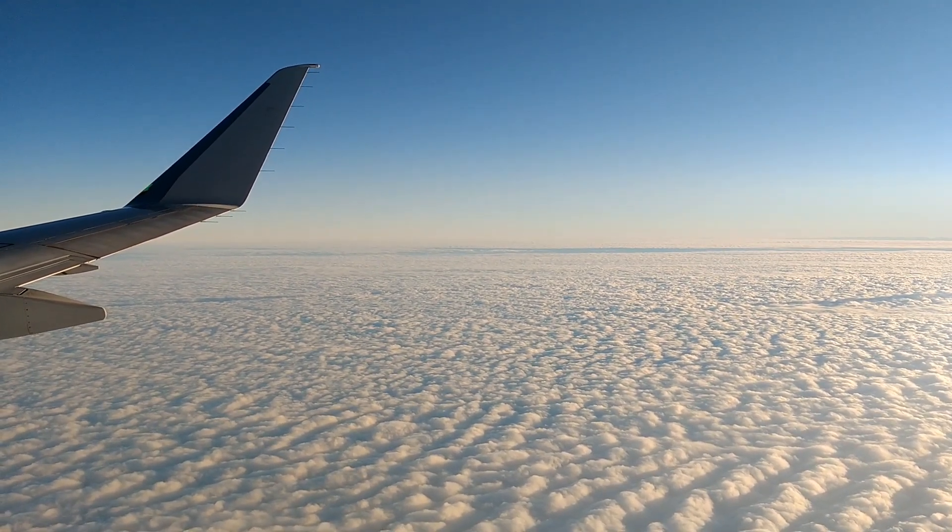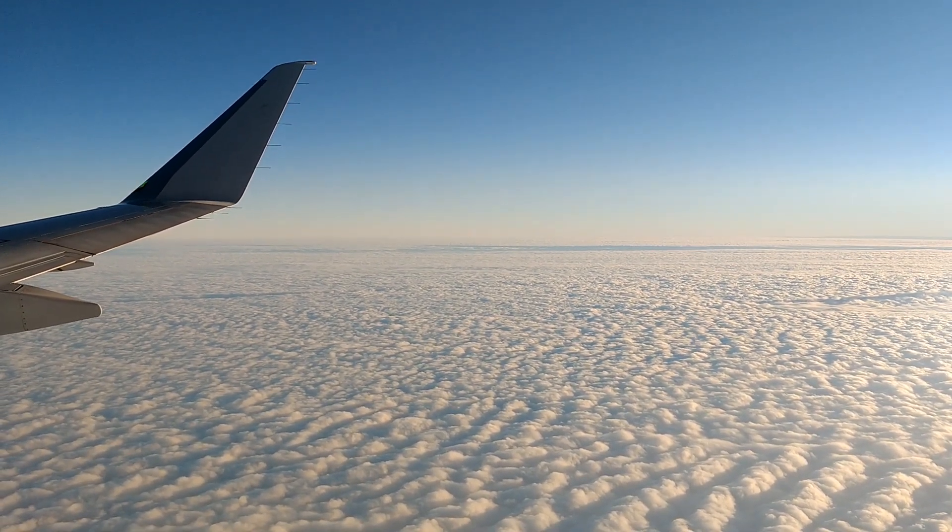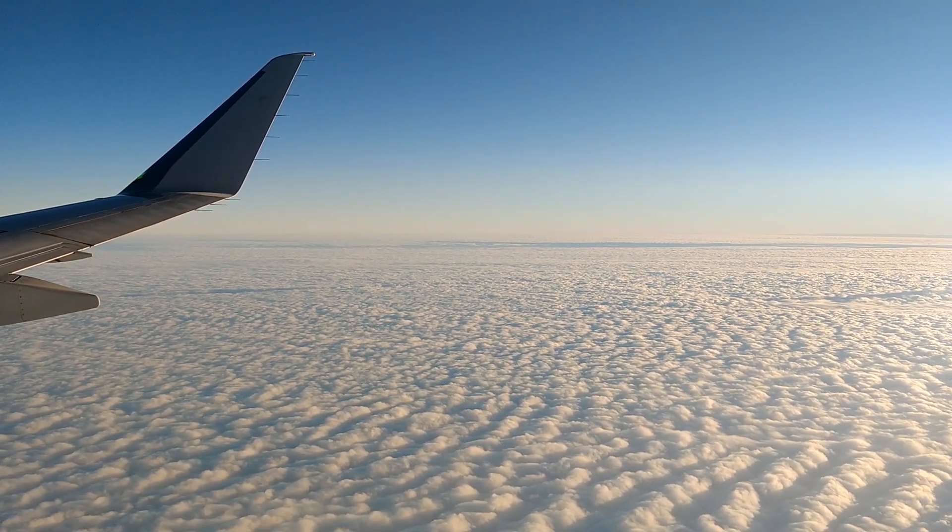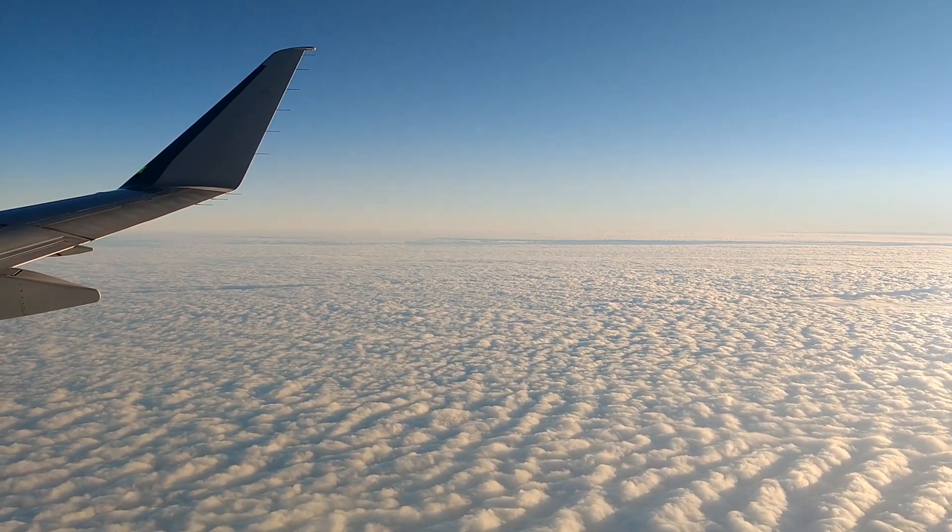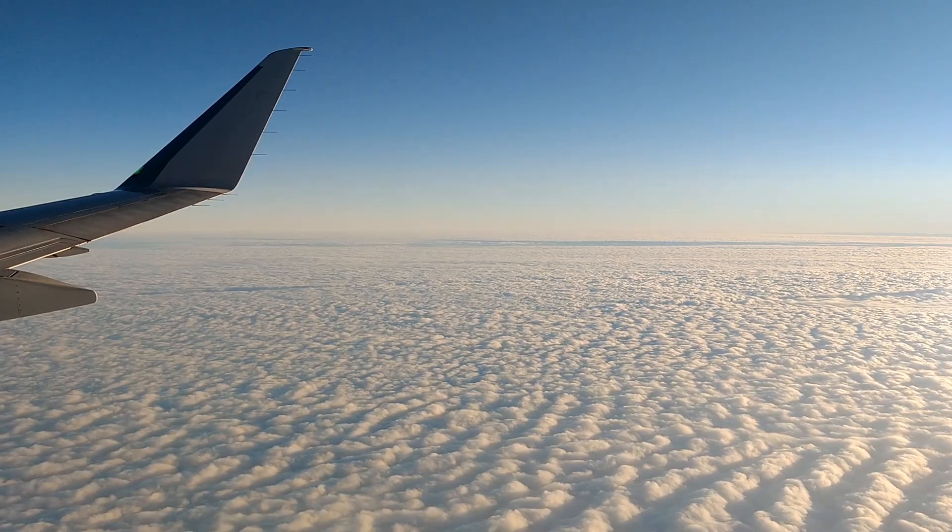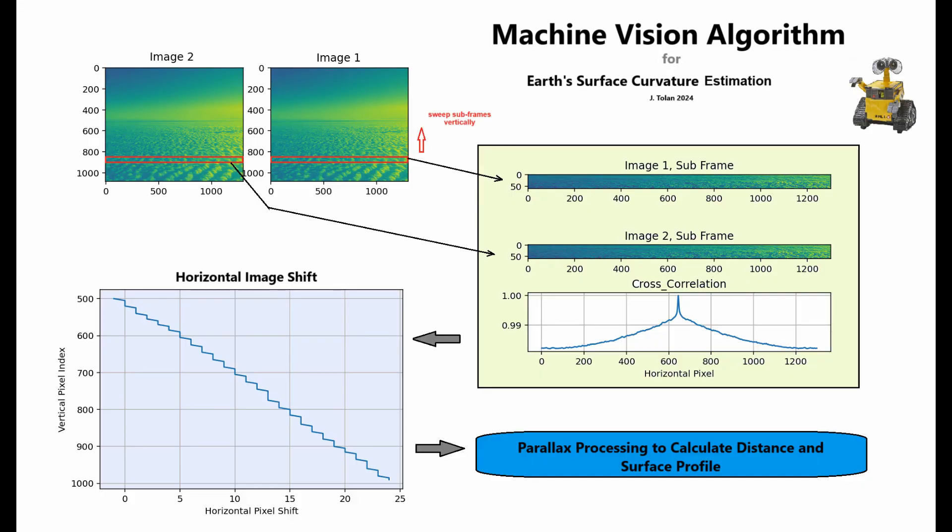This is how the clouds move faster in the foreground. This is the effect of parallax and we'll be exploiting this phenomena to calculate the surface curvature. Here's the basics: we're going to be slicing up the images in thin strips and do a cross correlation to determine how much they're shifted relative to each other, and then we will process the parallax.